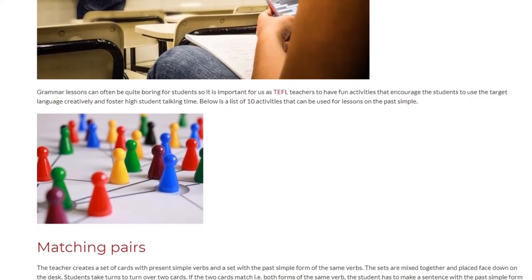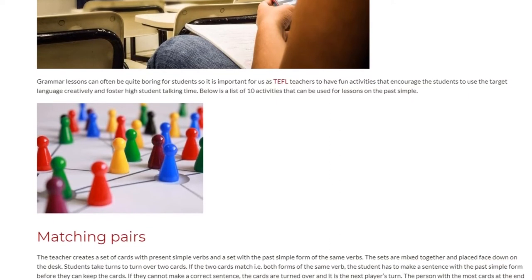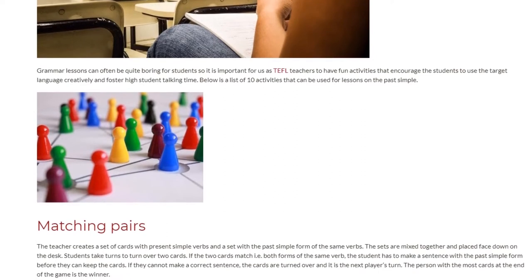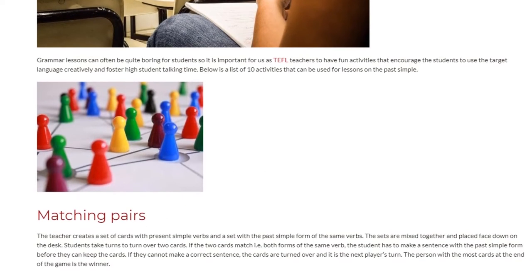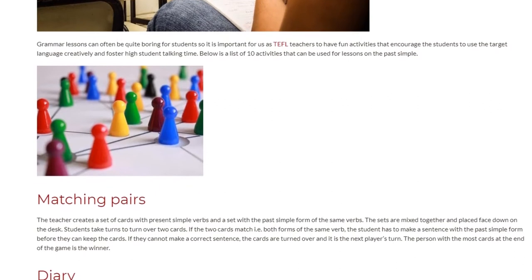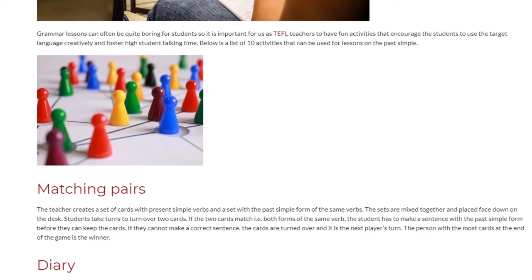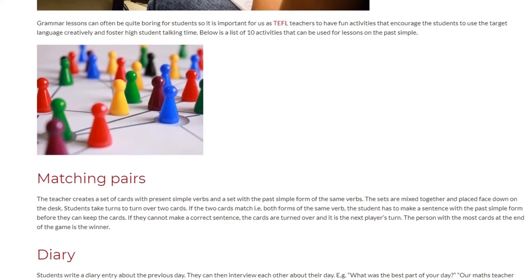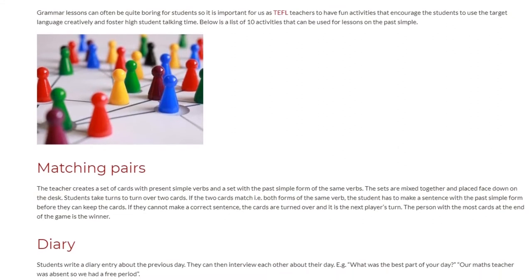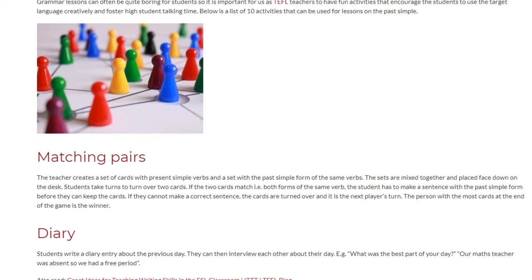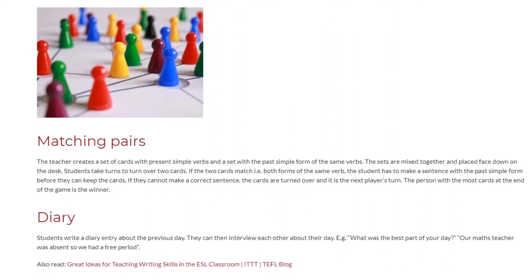Matching Pairs: The teacher creates a set of cards with present simple verbs and a set with the past simple form of the same verbs. The sets are mixed together and placed face down on the desk. Students take turns to turn over two cards. If the two cards match, that is both forms of the same verb, the student has to make a sentence with the past simple form before they can keep the cards.